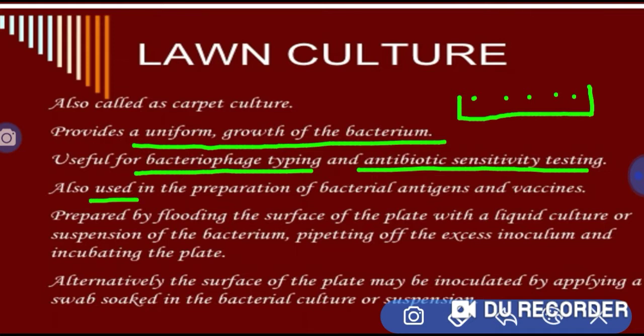Lawn culture is also used in the preparation of bacterial antigens and vaccines. Because when we use this culture, there are many bacteria with uniform growth, and we obtain bacterial antigens. We then add these antigens to an animal, we get antibodies. We then use those antibodies in a patient.